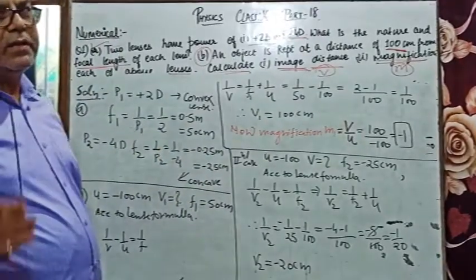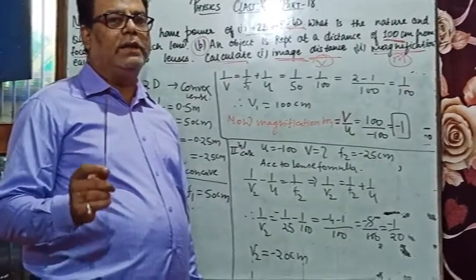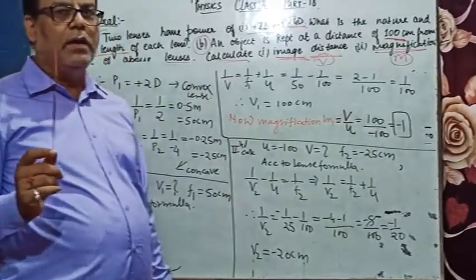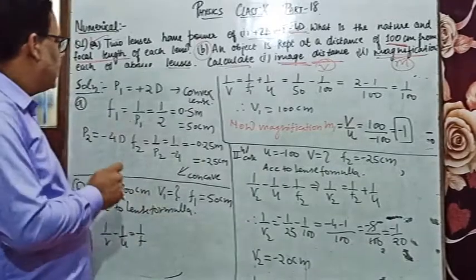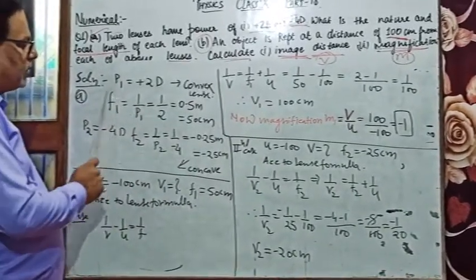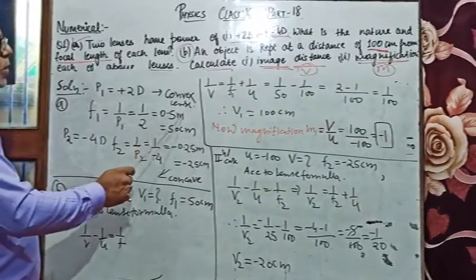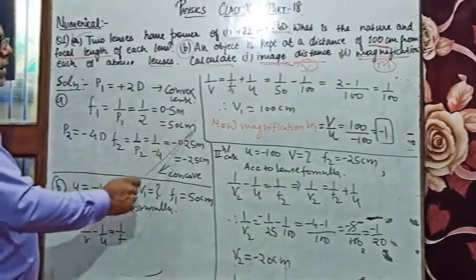For finding the magnification, you need to know the image distance. How do you get the image distance? Through calculation. Now see here, the power P1 is 2 diopter, so the focal length is 1/P1 = 1/2 = 0.5 meter, which is 50 centimeter.